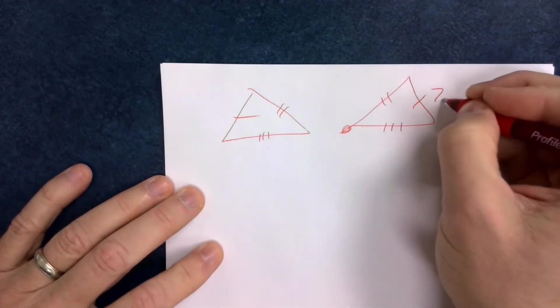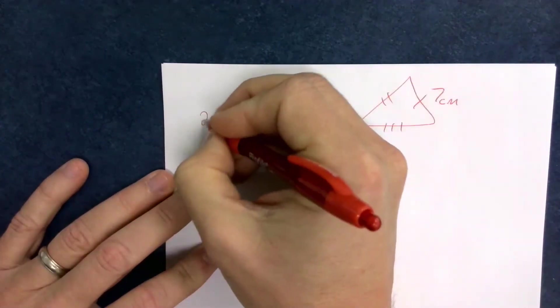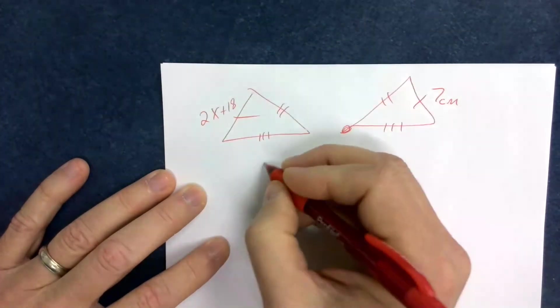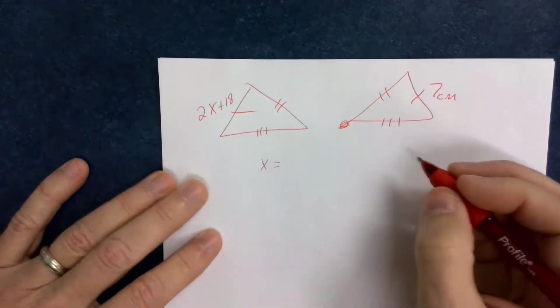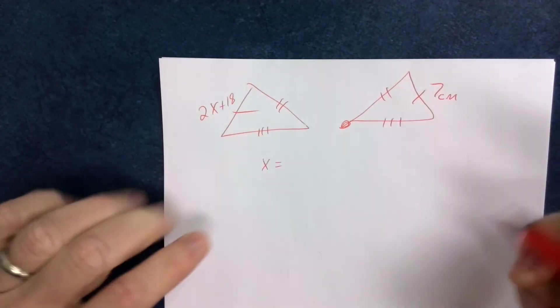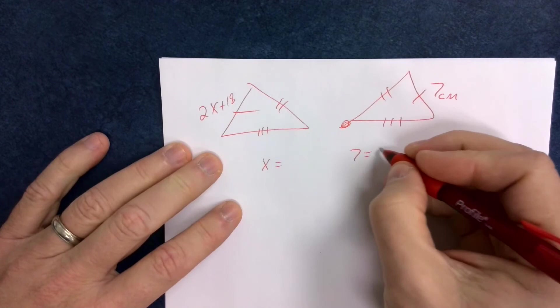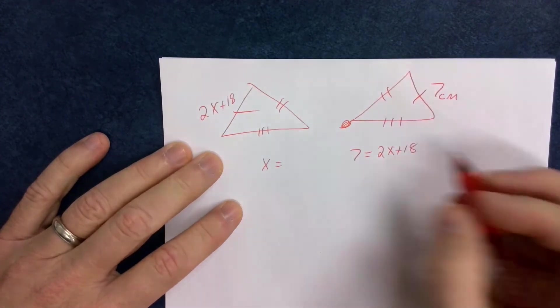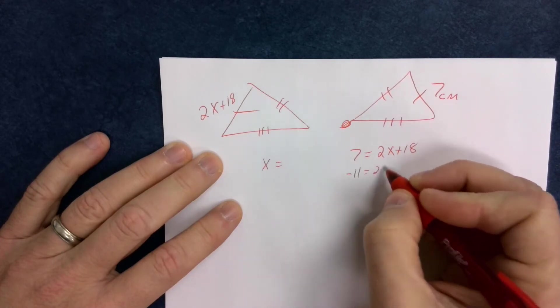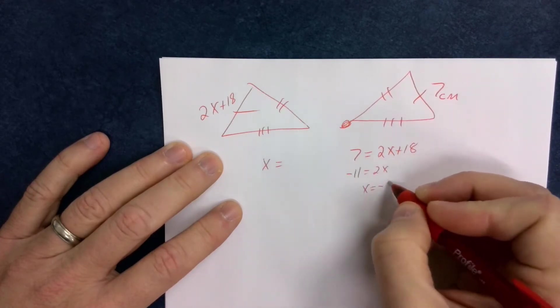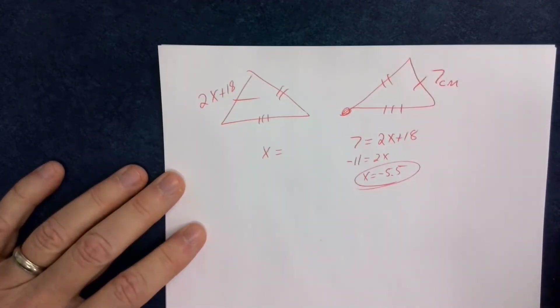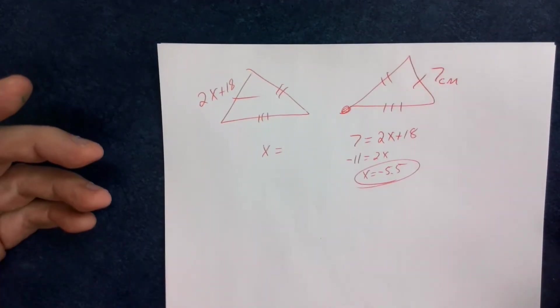Then if I know that this is 7 centimeters, and this is 2x plus 18, then I should be able to solve for x, because I know that since those two both have single dashes on them, that 7 must equal 2x plus 18, and then subtract the 18, and I get negative 11 equals 2x, and x equals negative 5.5, and that's what that would be. Okay, so those types of situations.